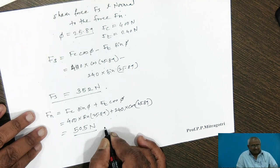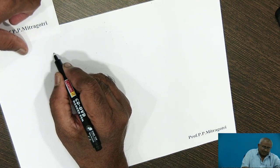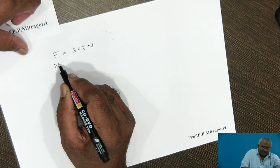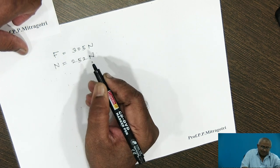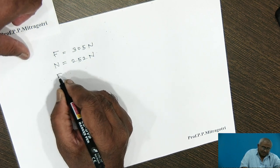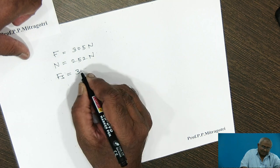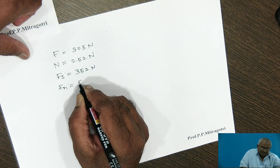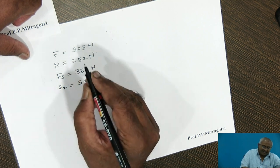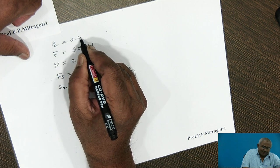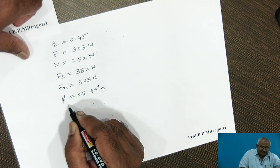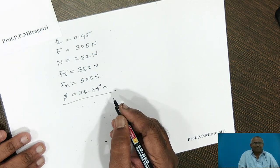To summarize all results: tool force F = 305 N, normal to the tool force N = 252 N, shear force Fs = 352 N, normal to the shear force Fn = 505 N, chip thickness ratio R = 0.45, and shear angle phi = 25.89 degrees. This is the complete solution to the problem.